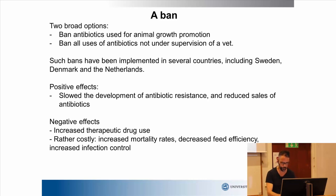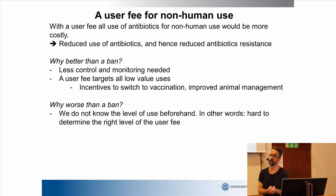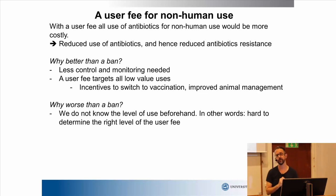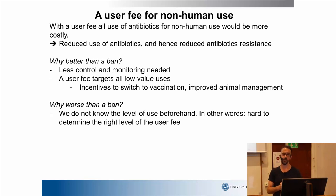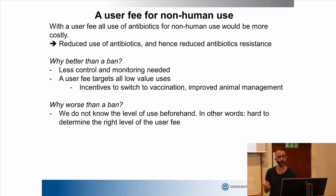An alternative to this would be to have what I call a user fee — a user fee for non-human use. What has been discussed in the literature is a user fee for non-human use. What I basically mean is that we would tax antibiotics; we would increase the cost of antibiotics for non-human use. This is an economic incentive. By increasing the price of antibiotics, we would have reduced use of antibiotics, and by the reduced use of antibiotics, we would have reduced development of antibiotic resistance.